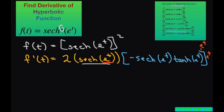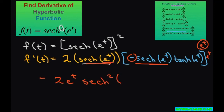Now let's simplify all this. It's all multiplying, so when you multiply this out you get a negative. So it's negative 2, and then bringing e to the power of t up front. Multiplying the two hyperbolic secants gives hyperbolic secant squared of e to the power of t, and then we still have our hyperbolic tan of e to the power of t.